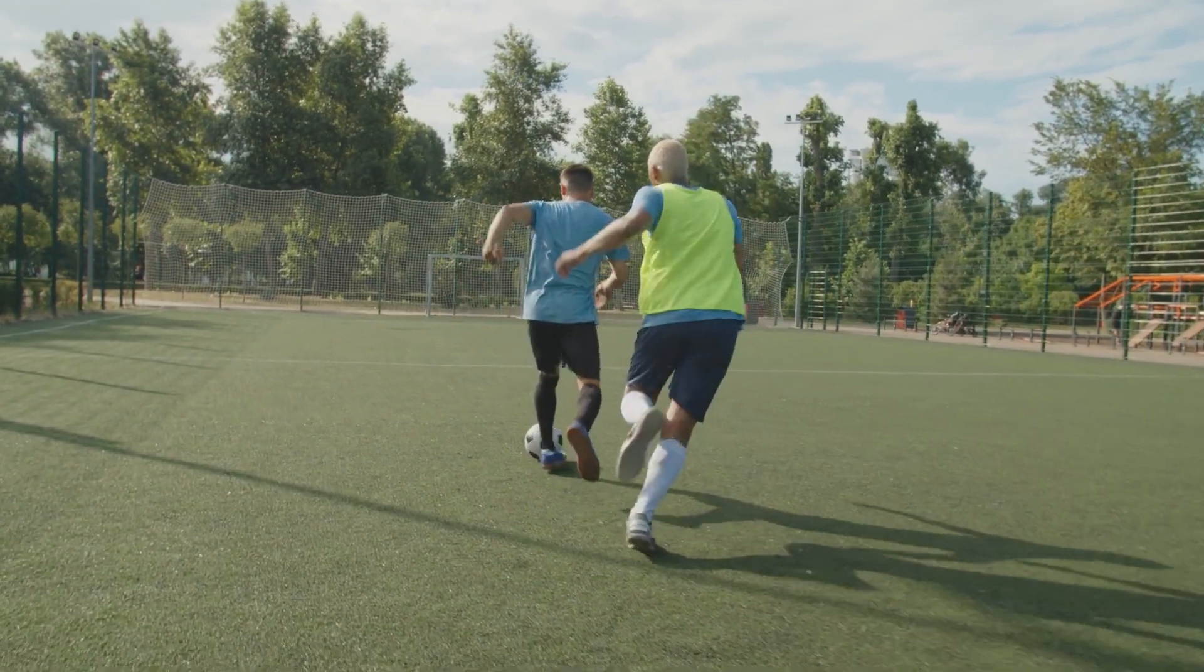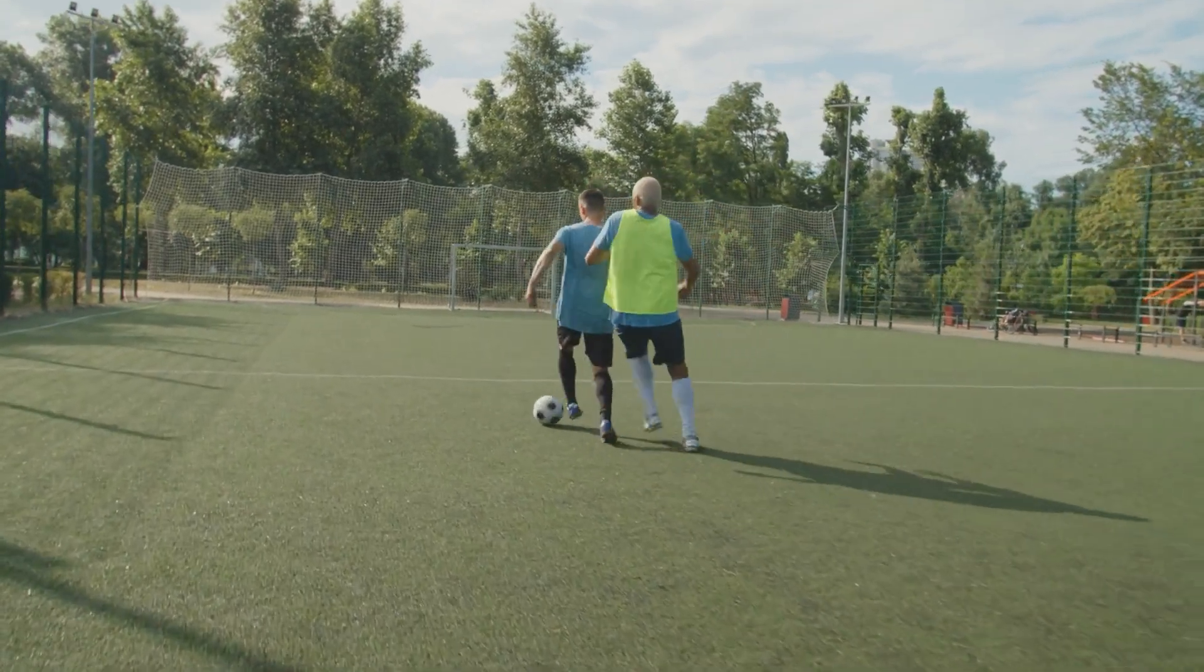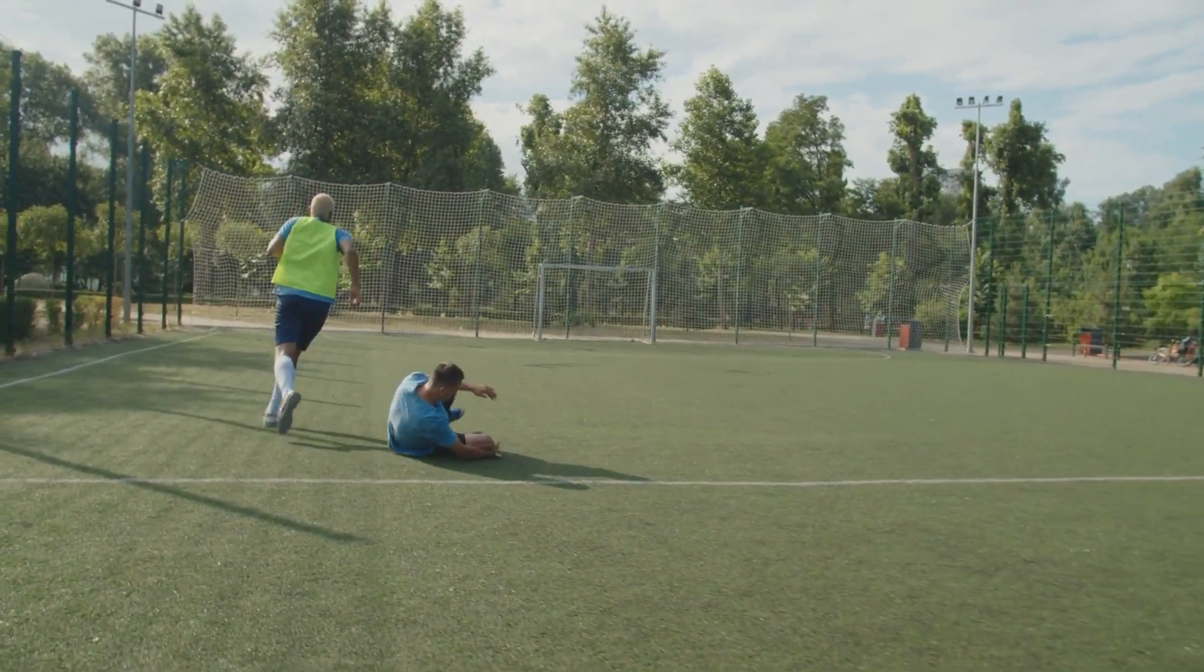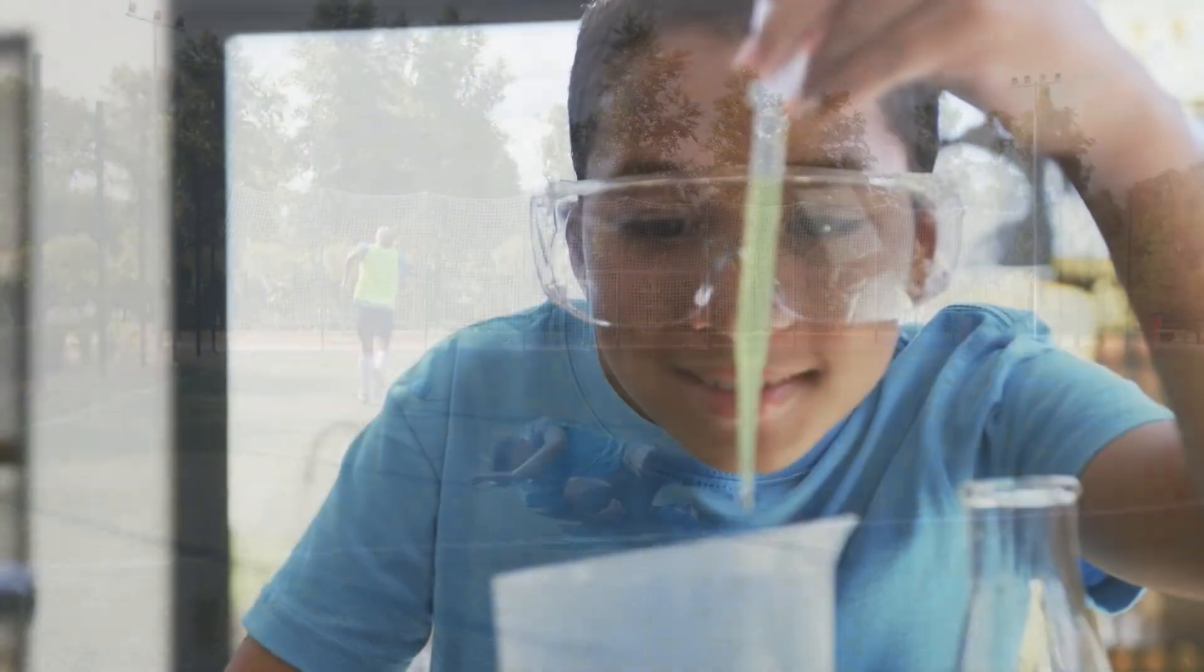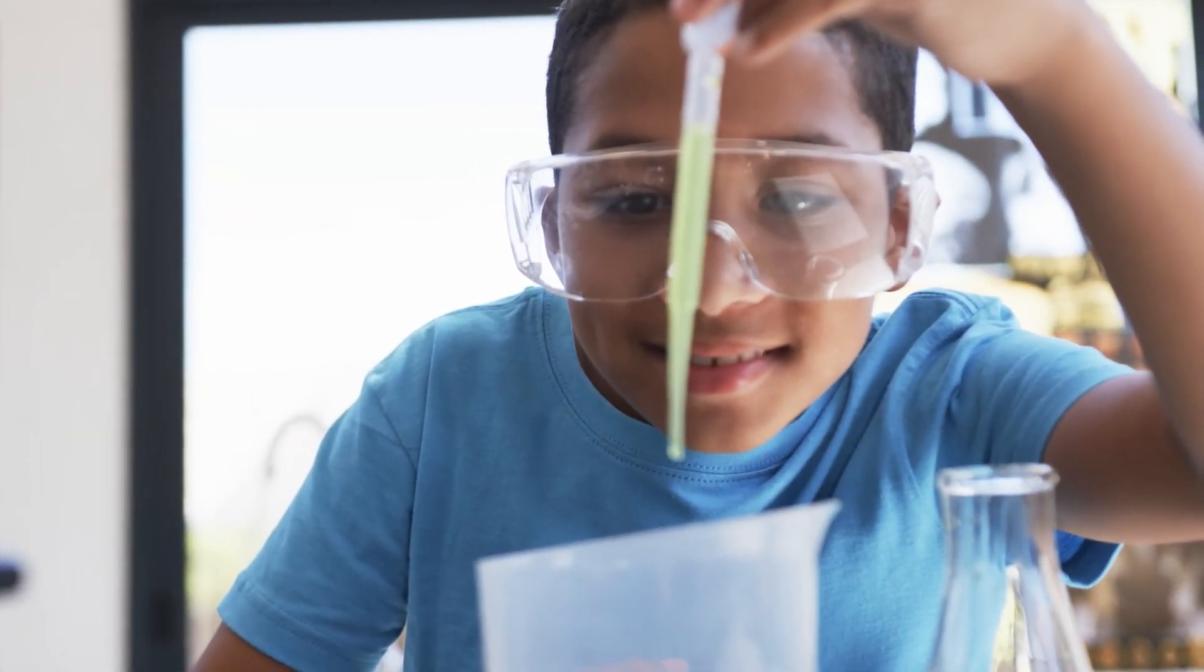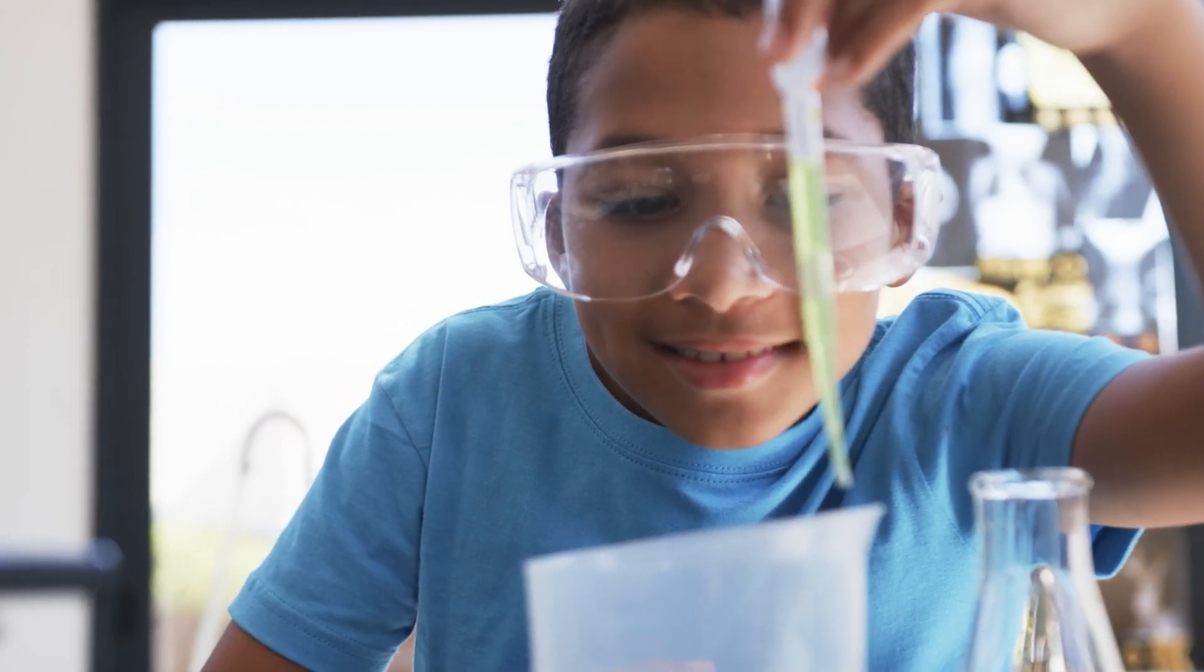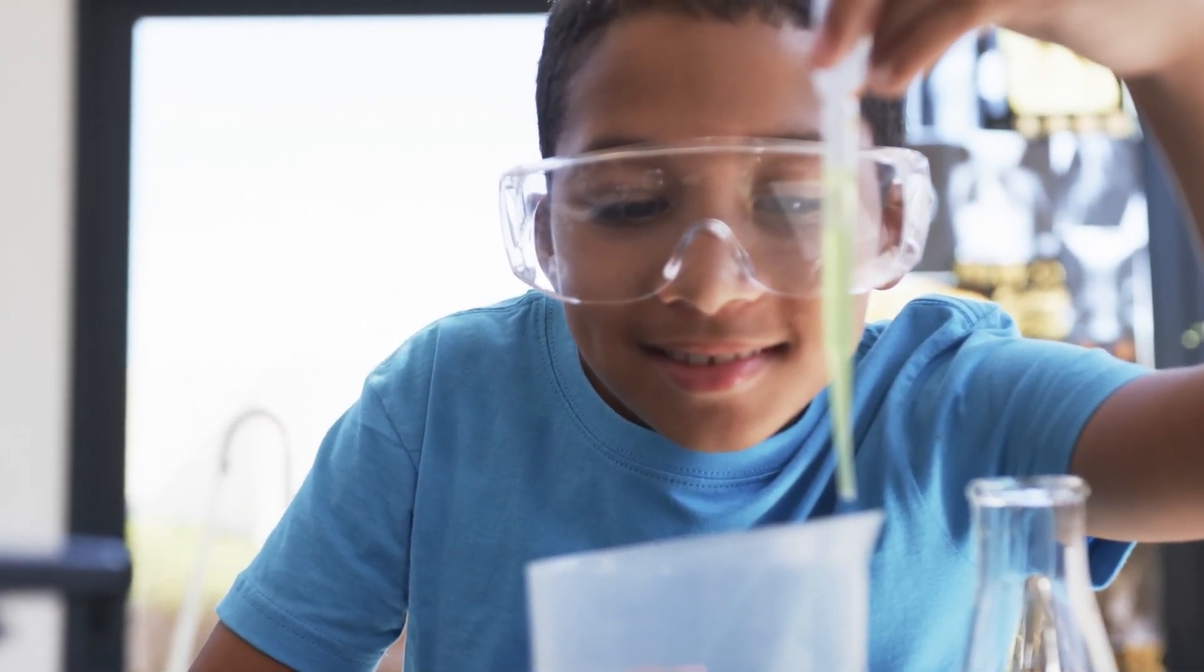Lab safety is like learning the rules of a sport before you play the game. Imagine stepping onto a basketball court or soccer field without knowing the rules. People could get hurt and the game would be total chaos. In a lab investigation or science experiment, lab safety rules are your playbook to make sure everyone stays safe and the game goes smoothly. So, what's in this science safety playbook?